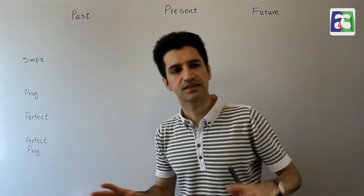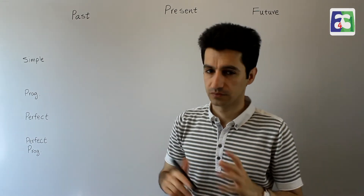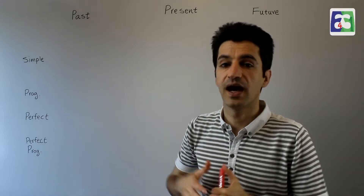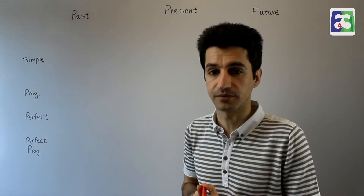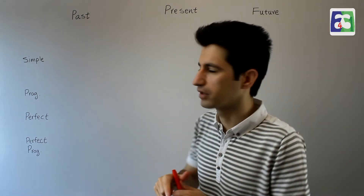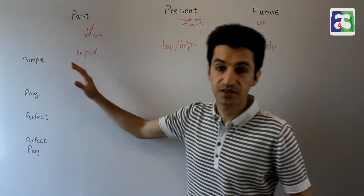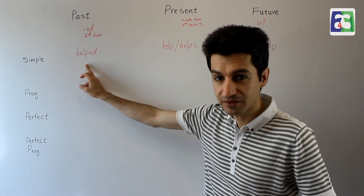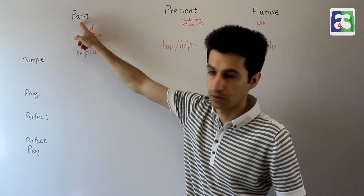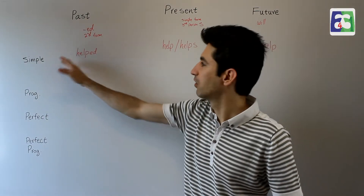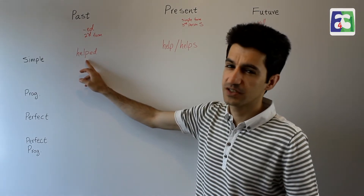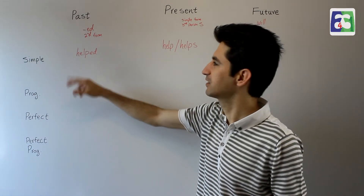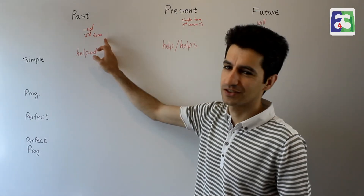So now let's take 'help' as our example and talk about these things. The first thing is that each of these tenses adds something to the verb. Past always adds ED, or the second form of the verb, to the main verb. Your verbs are in the second form. The first form of the verb is the infinitive without 'to' - the simple form of the verb. The second form is either the same verb taking ED, or the irregular second form.